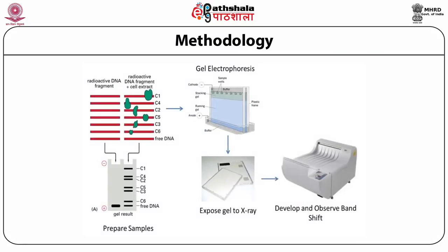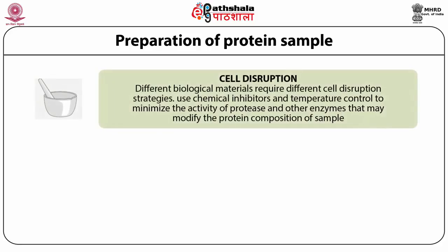Here is a brief outline of the methodology used in electrophoretic mobility shift assay. We have first isolation of the DNA fragments and the protein fragments that would form complexes with these DNA molecules. The free DNA and the bound DNA are then run on electrophoresis under native conditions. After the run, these are exposed to X-ray film and developed, and the band shift is observed.